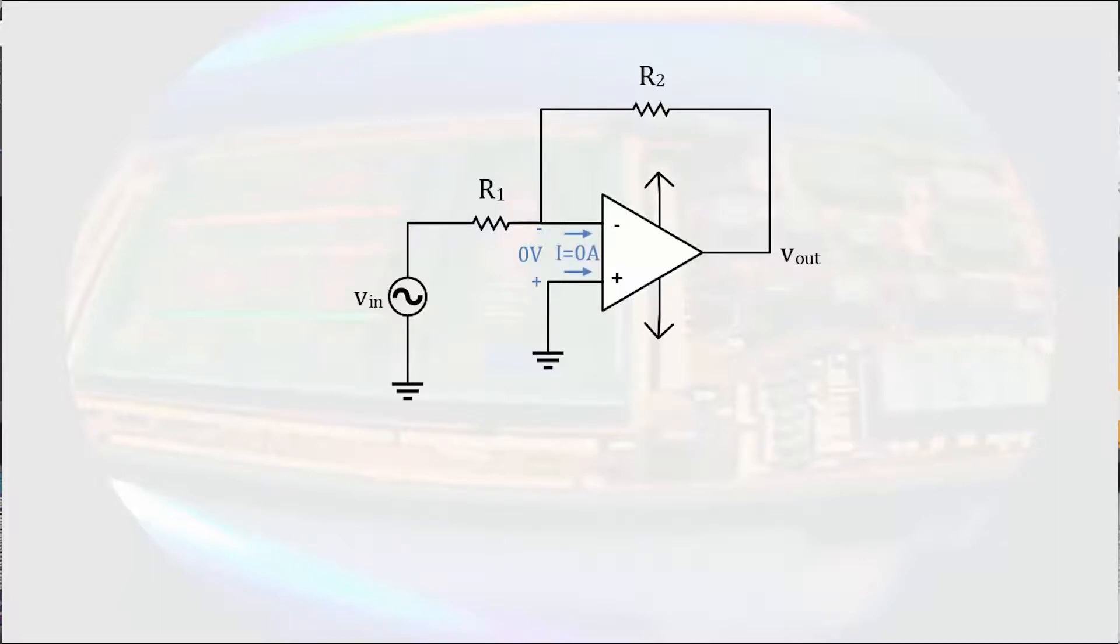When we say no current enters the input terminals of the operational amplifier, that is because we approximate the input resistance to be infinite. And when we say the output current of the operational amplifier can be anything, that is because we approximate the output resistance to be zero.